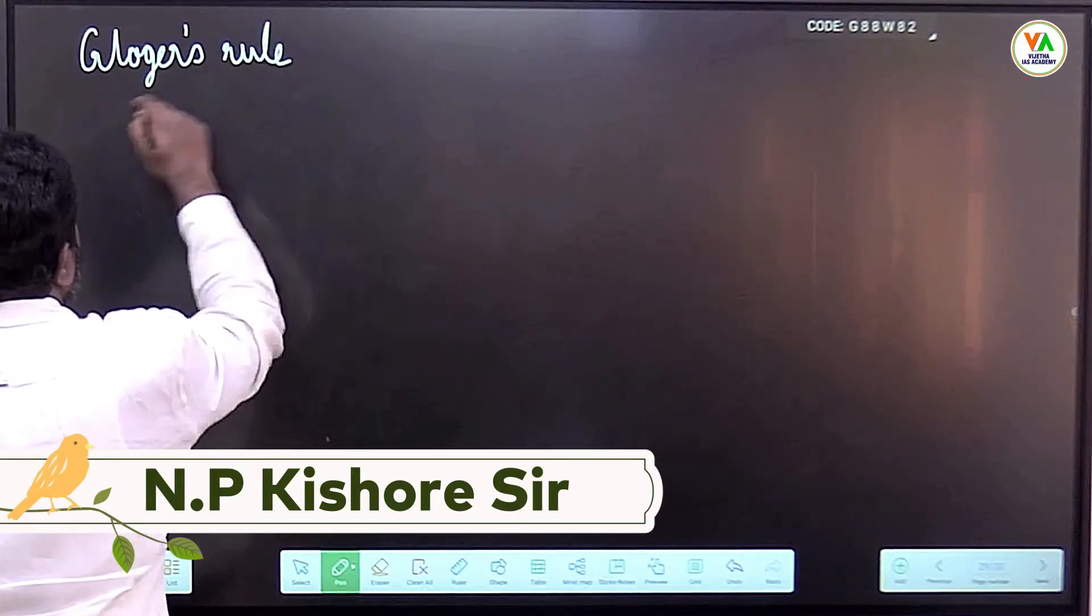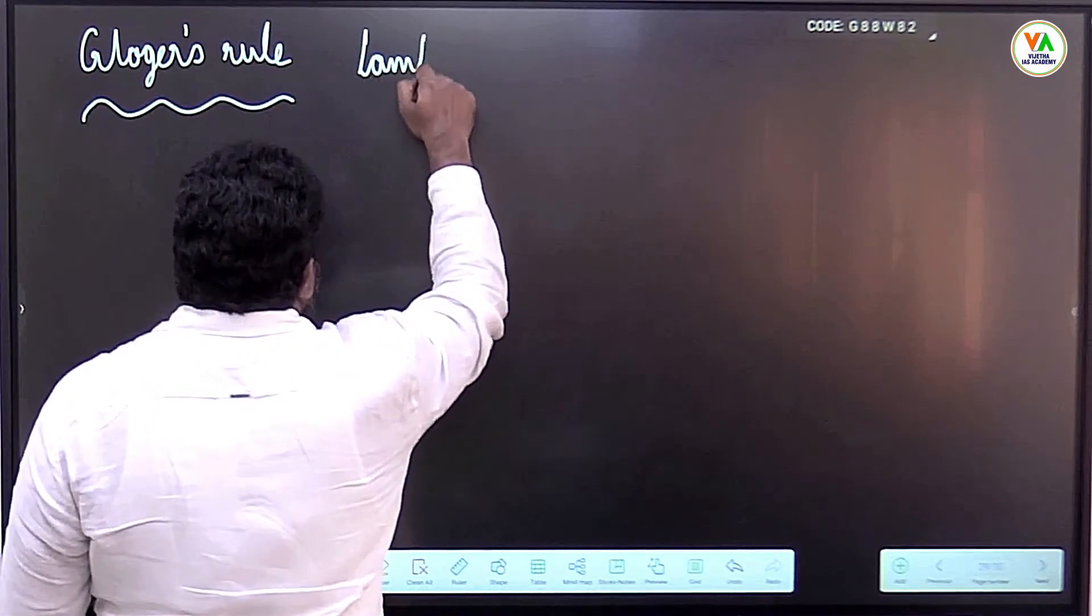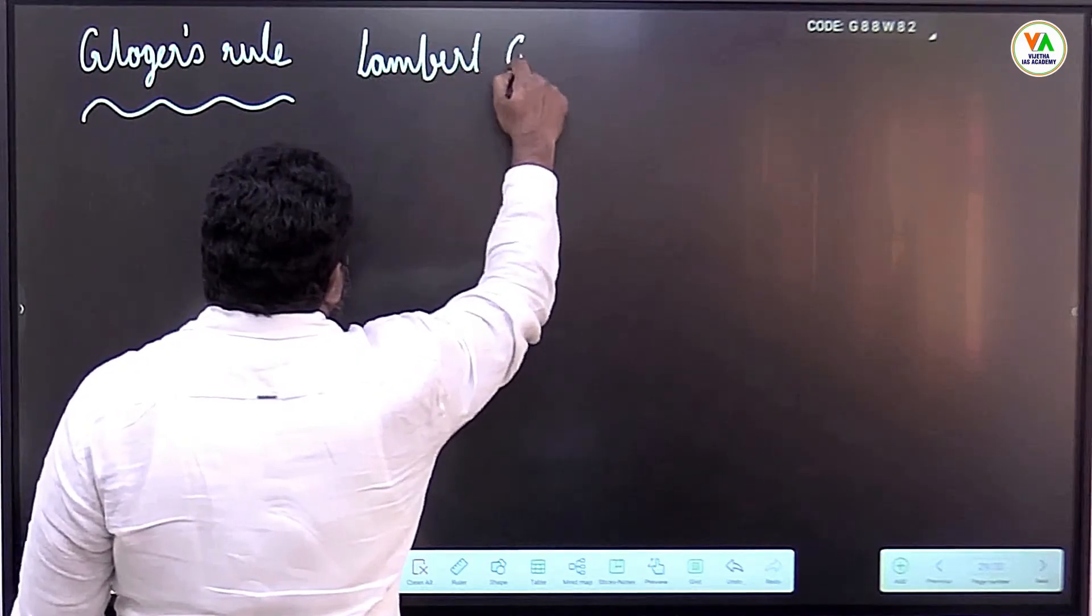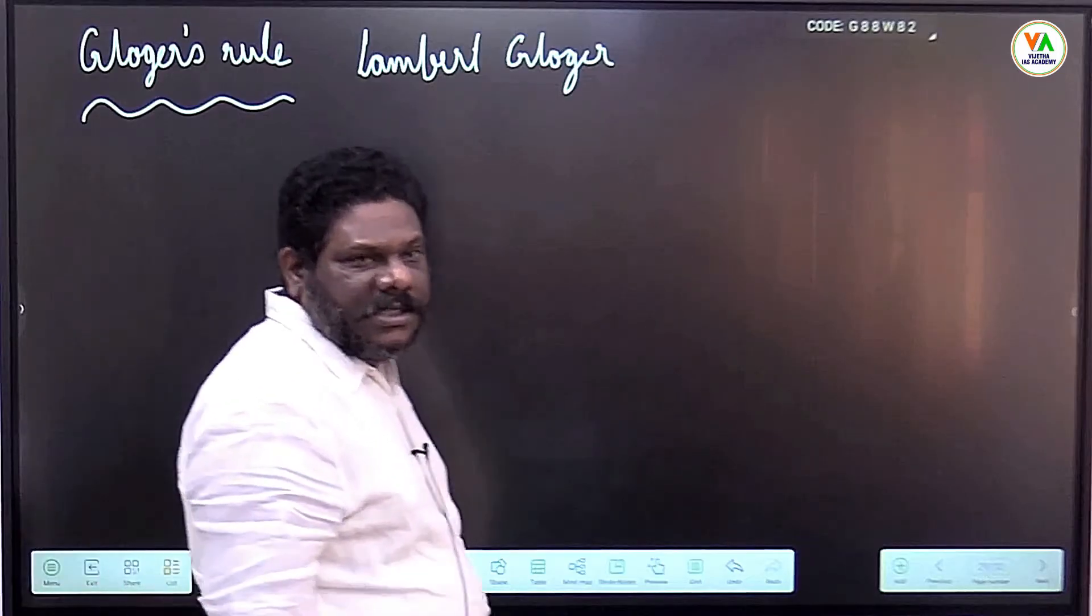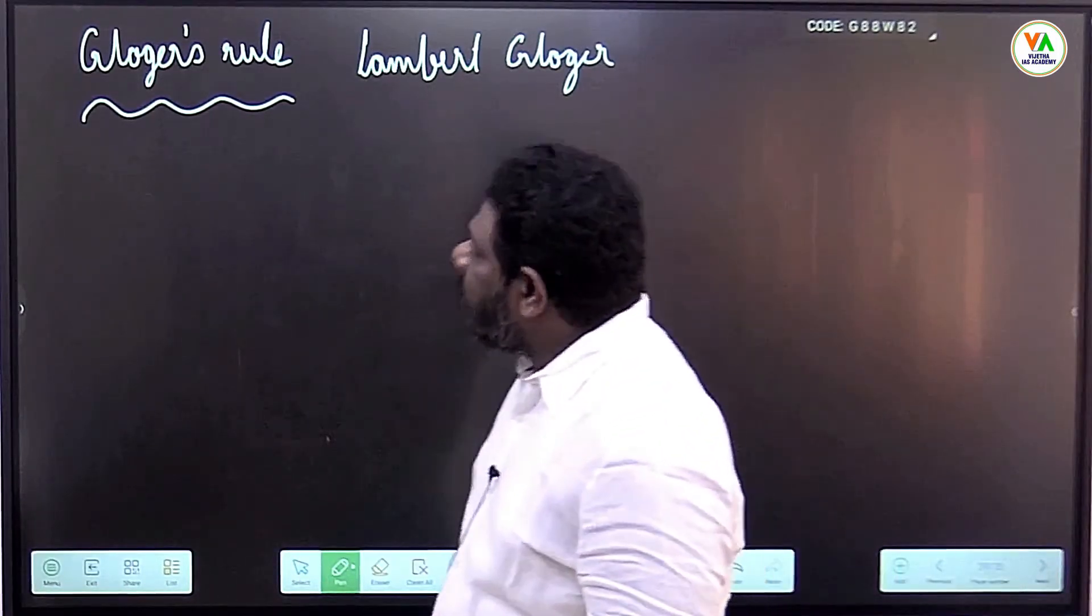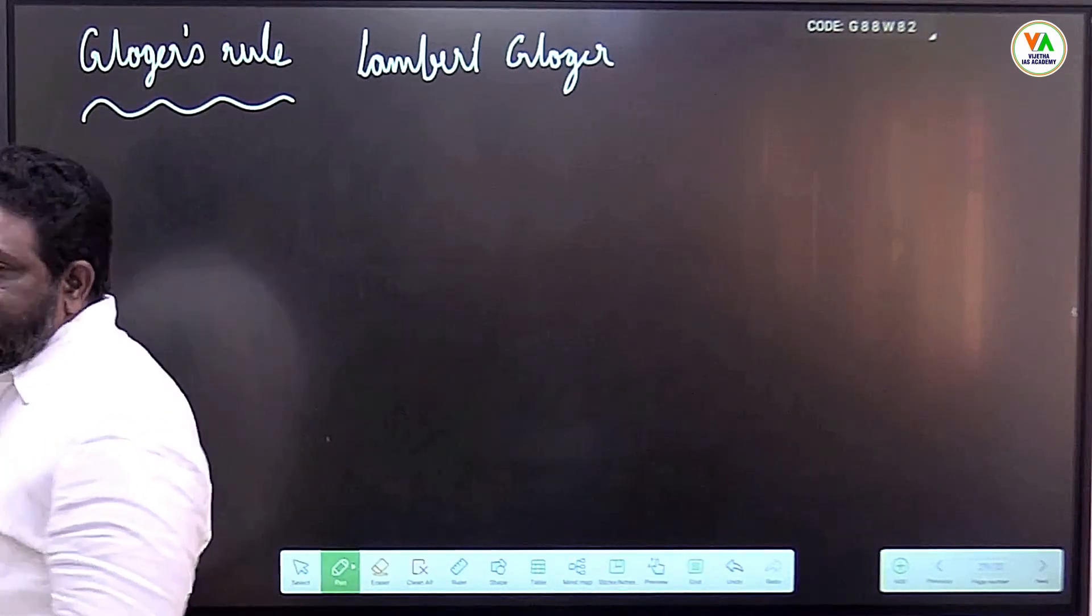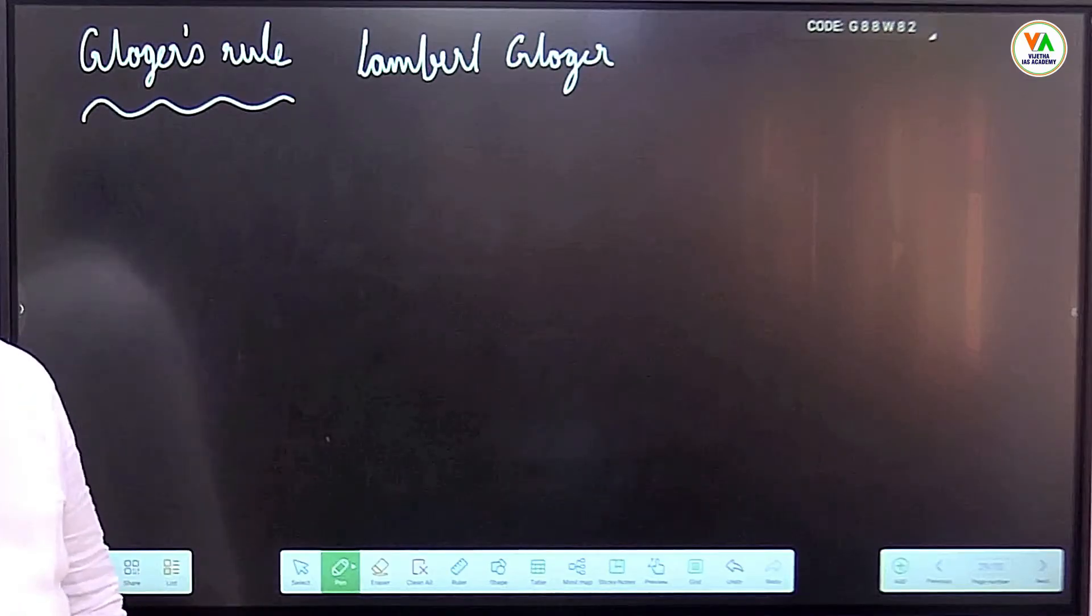Glogger's rule was given by Lambert Glogger, which speaks about skin coloration in endothermic animals—birds and mammals. Skin coloration according to him is because of two pigments: eumelanins and pheomelanins.